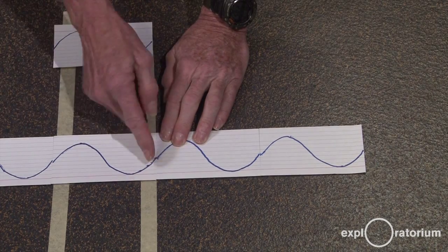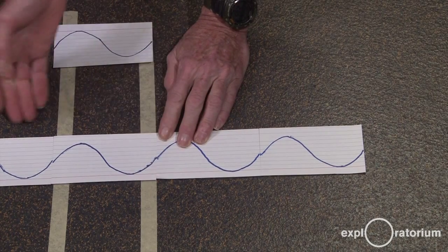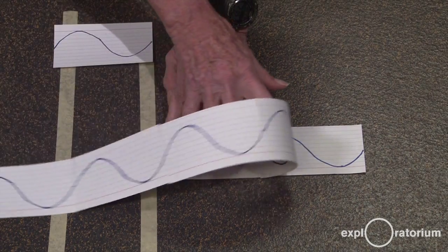To represent that reflection, I'm going to wait until a zero crossing at one edge of the 3x5 card is at the front and then fold it back.